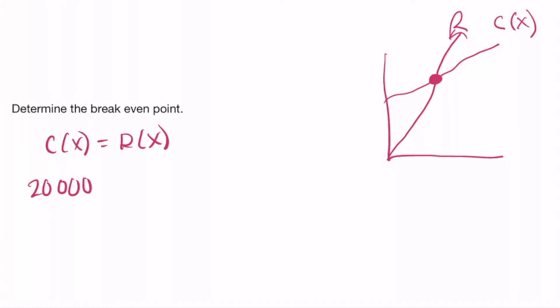$20,000 plus 20X equals 40X. $20,000 equals 20X. I just moved this X on the other side of the equals sign. Divide by 20. We get X equals 1,000.